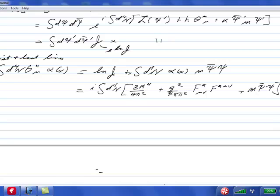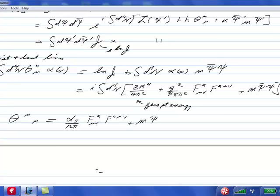Okay. This guy I'll dispose of in a minute, that's going to be zero point energy, and it ends up giving our desired relationship. So the trace of theta is alpha strong over 12 pi f mu mu plus m psi bar psi. So we've gotten our relationship out.